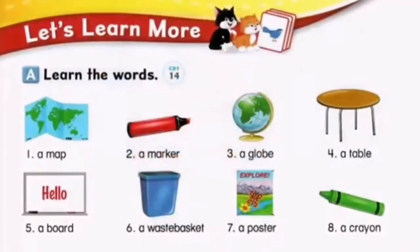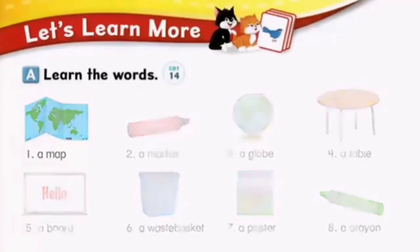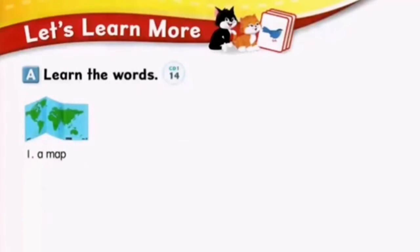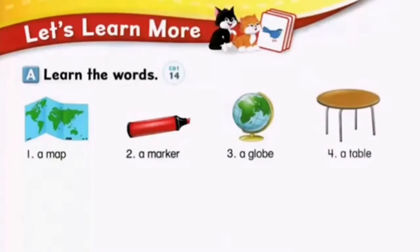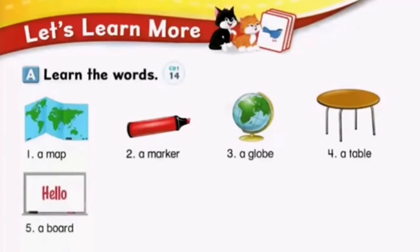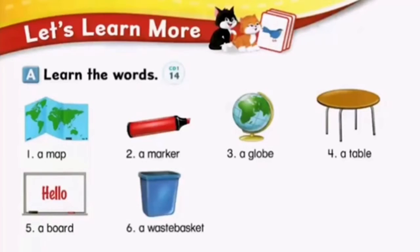Page eight. Let's learn more. Learn the words. Number one: a map. Number two: a marker. Number three: a globe. Number four: a table. Number five: a board. Number six: a waste basket.